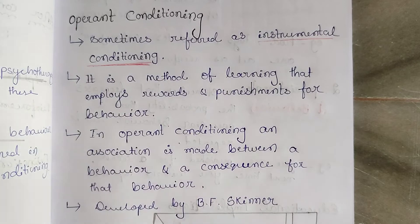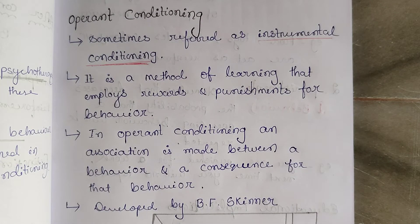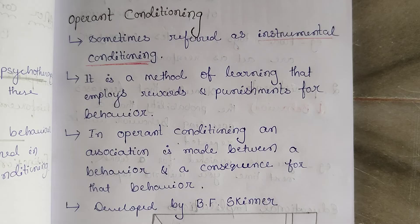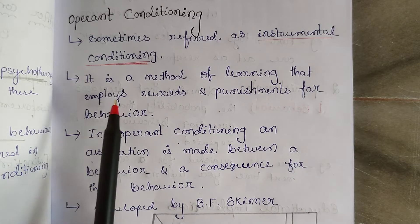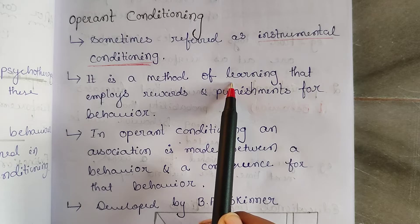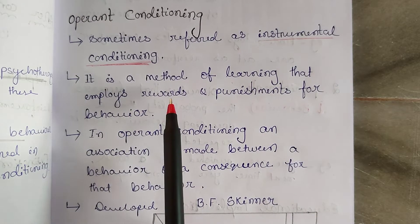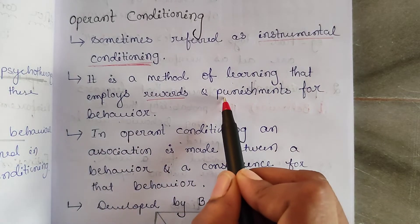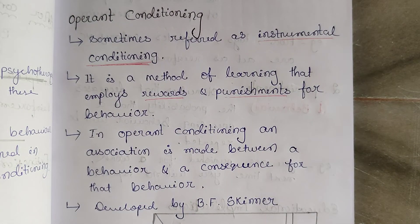What do we mean by instrumental conditioning? For example, your father will say: if you get first rank, I will buy a cycle for you, give you a toy, or give you chocolate. These are examples of instrumental conditioning. Operant conditioning is a method of learning that employs rewards and punishment for behavior — you can get a reward or punishment based on your behavior.